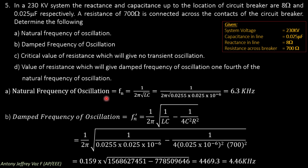Natural frequency of oscillation Fn = 1 / (2π √(LC)). First, find inductance from reactance: L = XL / (2πf) = 8 / (2π × 50) = 0.0255 Henry. Capacitance is 0.025 microfarad = 0.025 × 10^-6 farad. Substituting these values, the natural frequency of oscillation is 6.3 kHz.